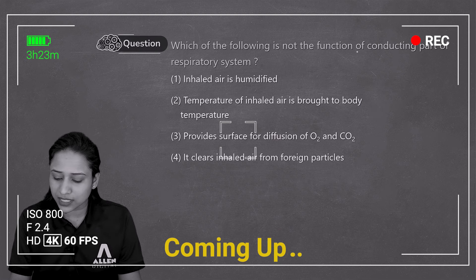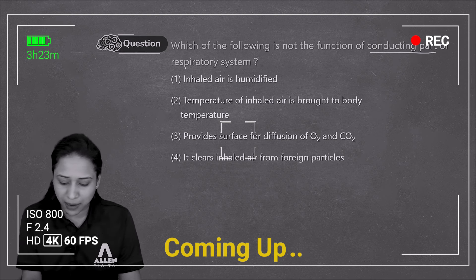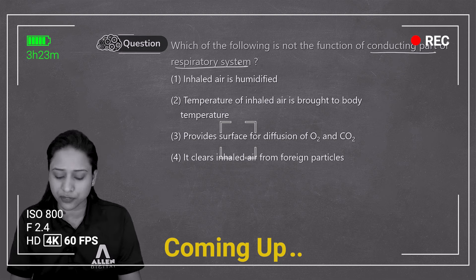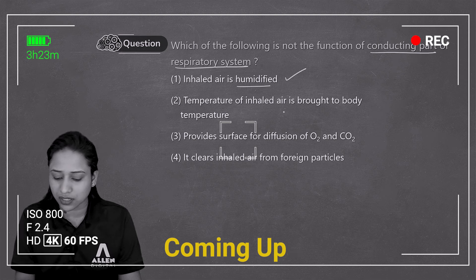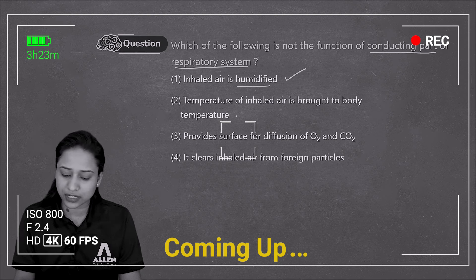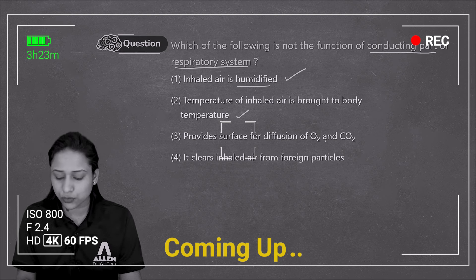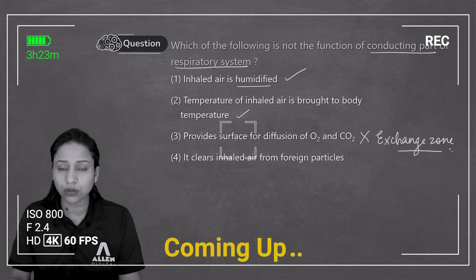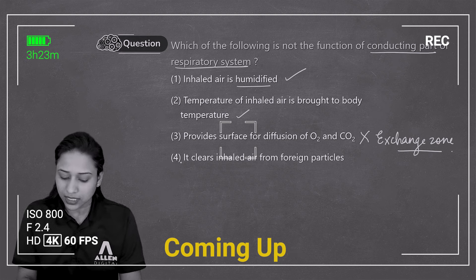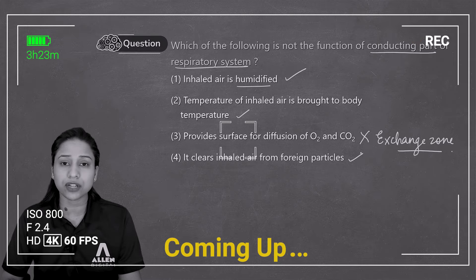Which of the following is not the function of the conducting part of the respiratory system? Humidification of inhaled air was a function. Temperature regulation — inhaled air being brought to body temperature — was also a function of the conducting zone. Providing a surface for the diffusion of oxygen and carbon dioxide is not a function of the conducting zone; that is the function of the exchange zone. Clearing inhaled air from foreign particles was also a function of the conducting zone.